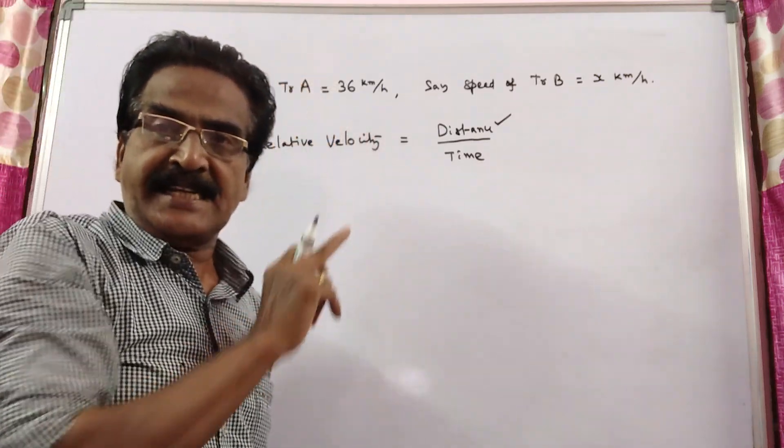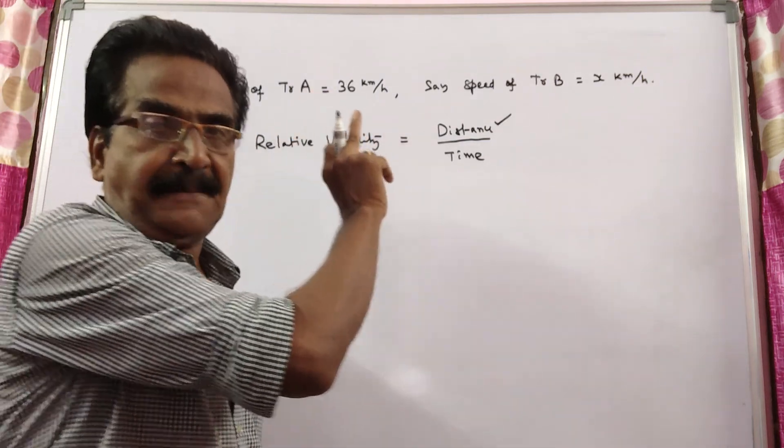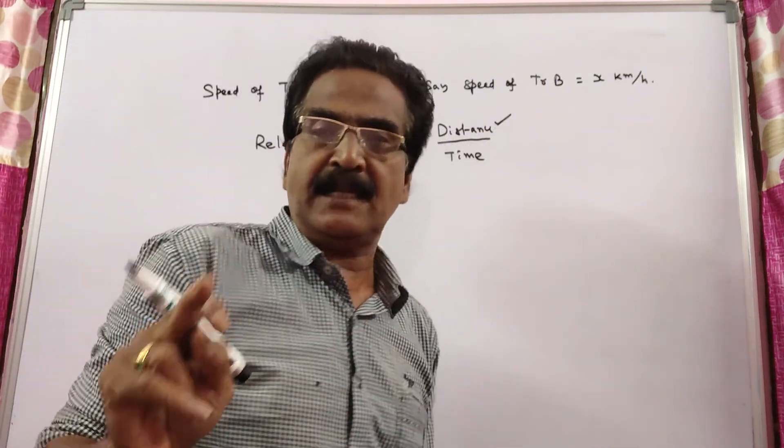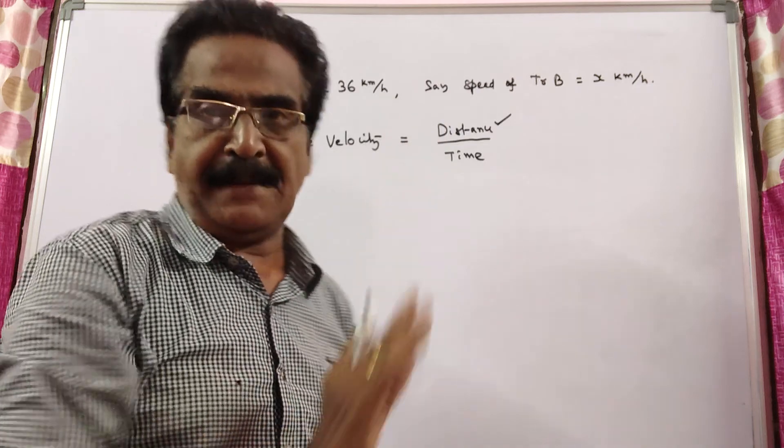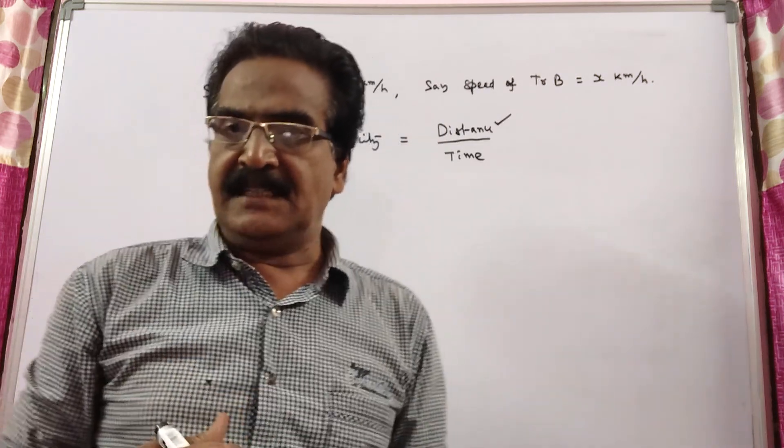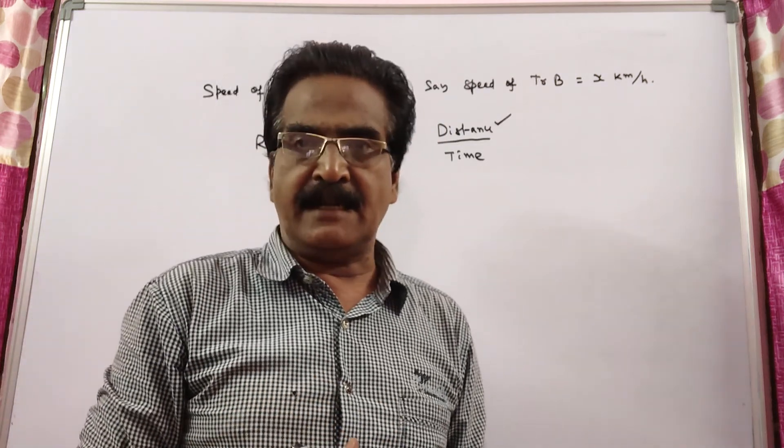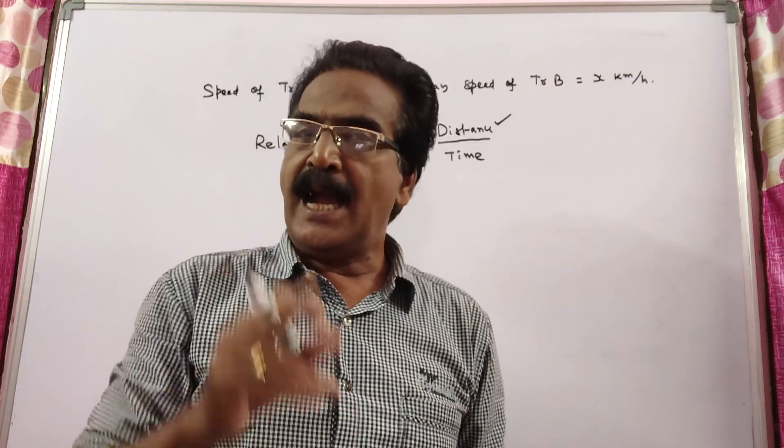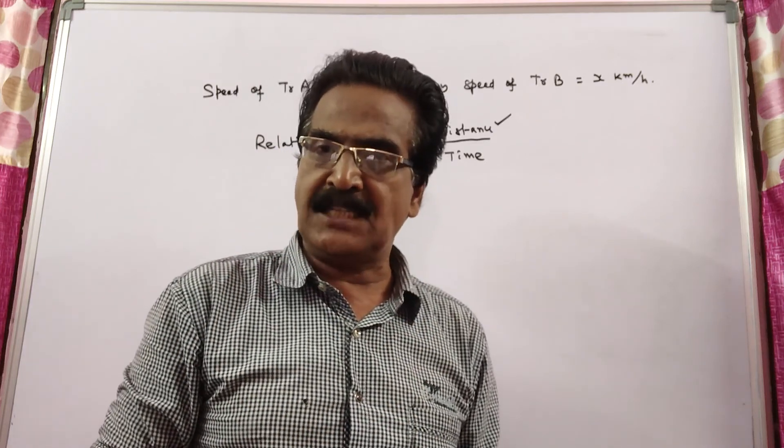Train A speed is given as 36 kmph. Let the speed of train B be x kmph. The two trains cross each other in 20 seconds, and the sum of the lengths of the two trains is also given.